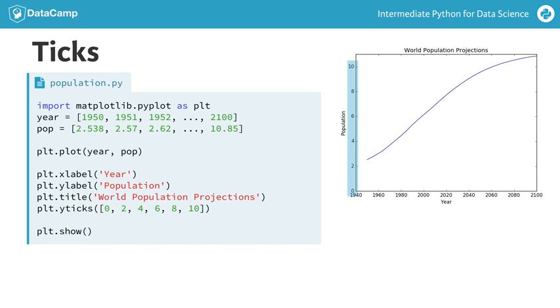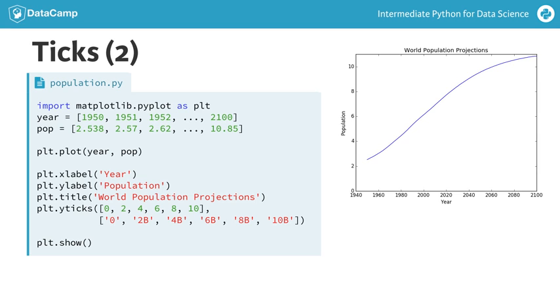Next, to make it clear we're talking about billions, we can add a second argument to the yticks function, which is a list with the display names of the ticks. This list should have the same length as the first list. The tick 0 gets the name 0, the tick 2 gets the name 2b, the tick 4 gets the name 4b, and so on. By the way, b stands for billions here. If we run this version of the script, the labels will change accordingly. Awesome.